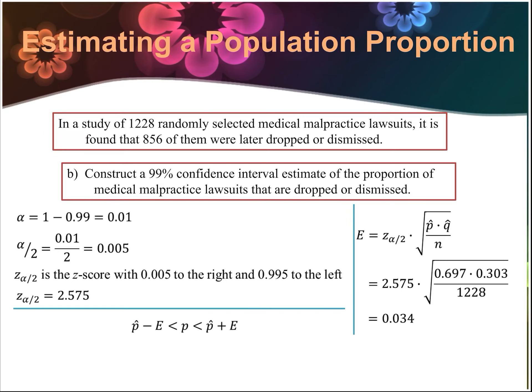The true proportion should be somewhere between the sample proportion plus the margin of error and the sample proportion minus the margin of error. So the true proportion should be between 0.697 + 0.034 and 0.697 − 0.034, giving us 0.663 to 0.731. That means 99% of the time, our true proportion should be somewhere between 0.663 and 0.731.